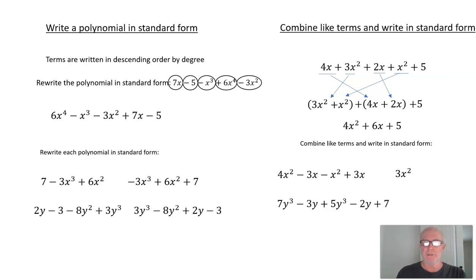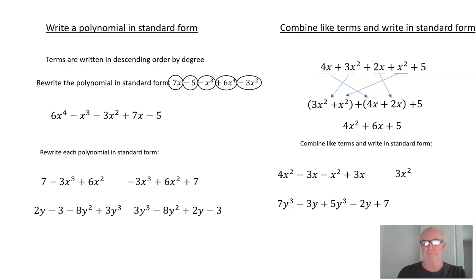Try this one: 7y³ − 3y + 5y³ − 2y + 7. Pause the presentation, put those in order and combine like terms, then resume. If you did this correctly, you would get 12y³ − 5y + 7.